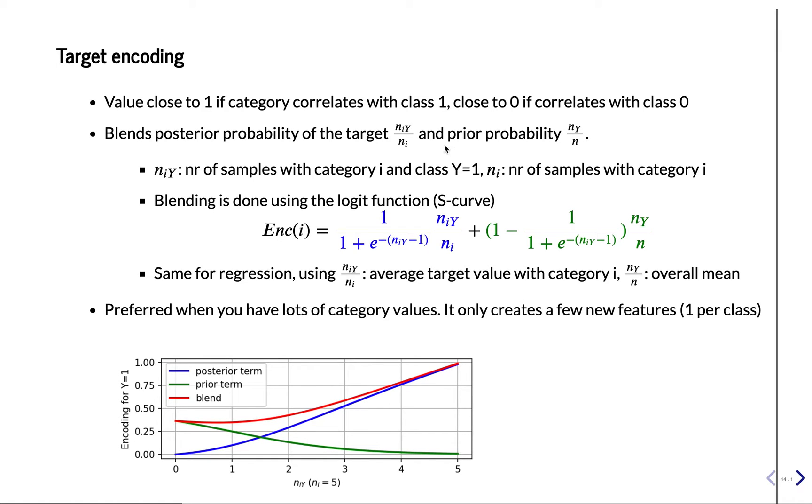And then we have the posterior, that's okay, if you look at the label, and we see that many, so NY_i is here, there's a number of samples with category i and the positive class.